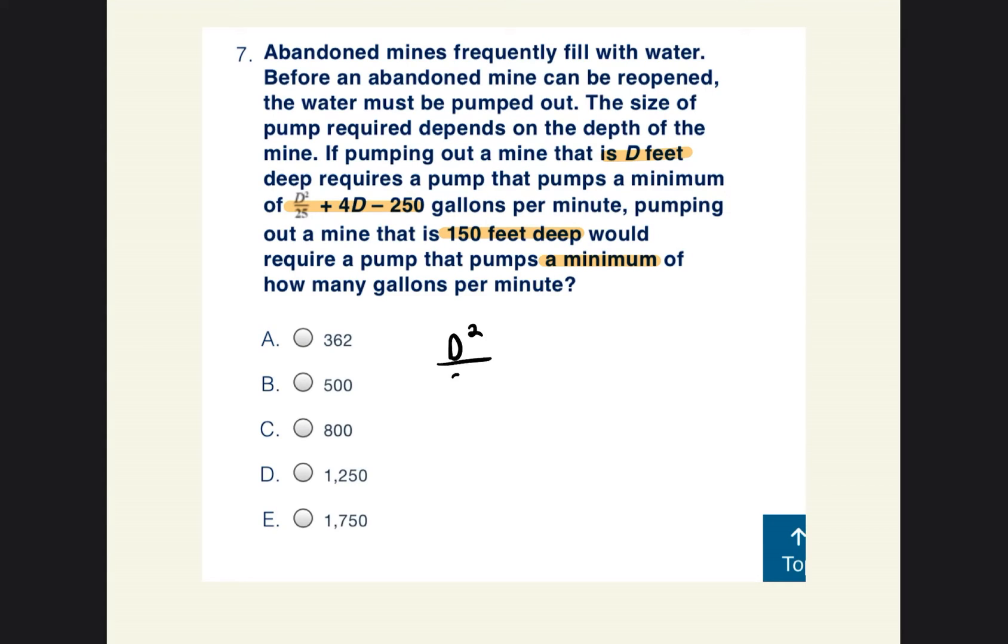And then it gives us an equation, d squared over 25 plus 4d minus 250. And then it says d is equal to 150 feet. So d is equal to 150. So what we're going to do is we're just going to plug in 150 wherever we see the d. So we're going to plug in 150 squared divided by 25 plus 4 times 150 minus 250.